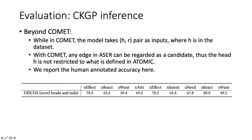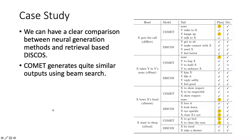Different from the previous COMET setting where the heads come from the Atomic dataset, we check the generalization ability of our model using novel heads outside of the Atomic domain. We report the human-annotated accuracy and find that it is feasible to populate Acer into a common sense knowledge graph. Looking at some cases, COMET generates very similar results — for example, given 'X gets a call,' COMET generates 'Y talks to X' and 'Y talks to X,' which are essentially the same. Discourse yields much more diverse tails like 'Y needs X' and 'Y feels better.'